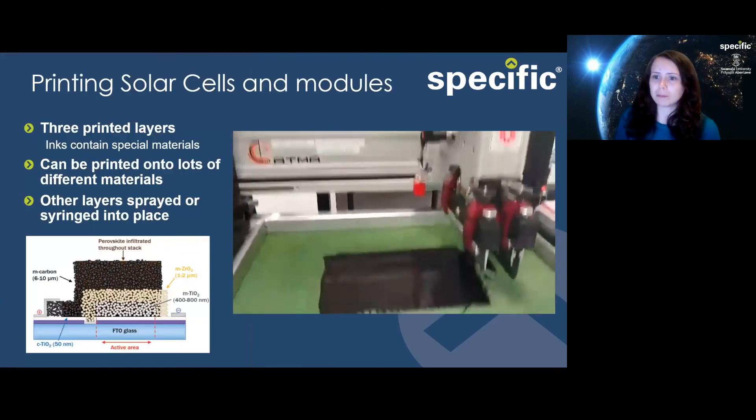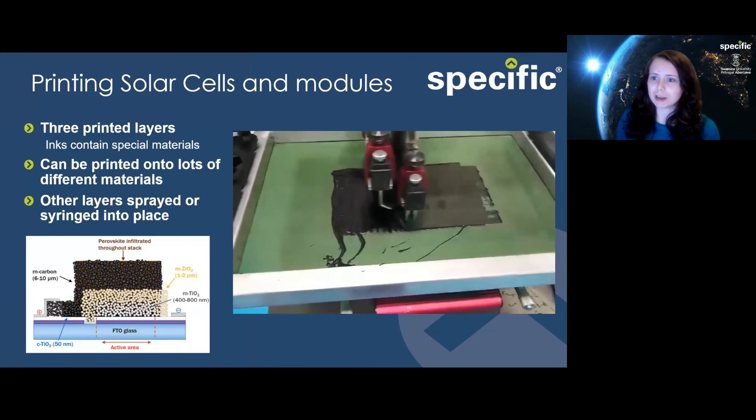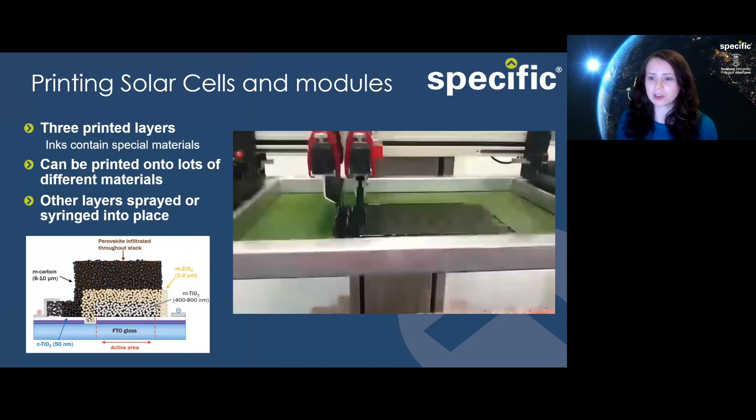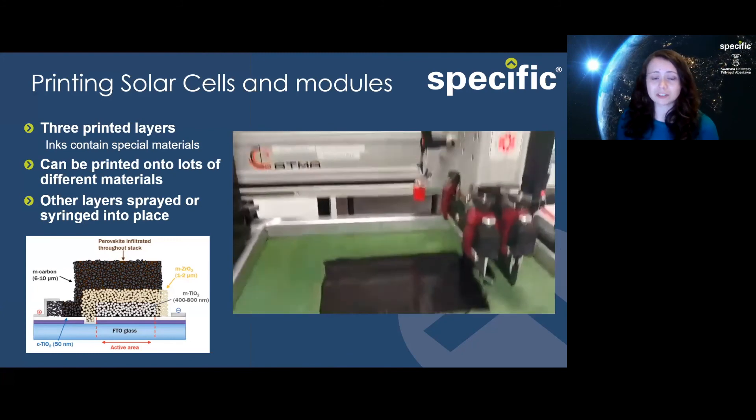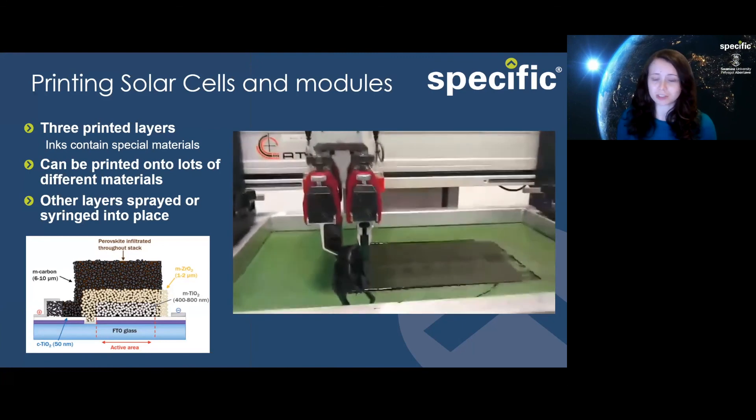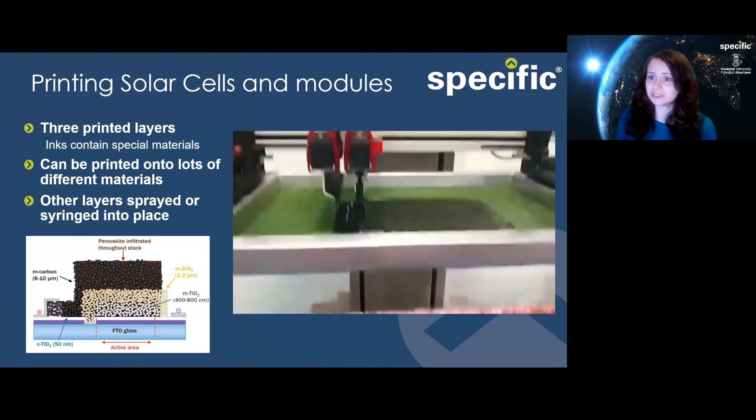Printing happens with three of the different layers. What you can see here is conductive carbon going down. We also put down titania and zirconia, and the things that aren't printed are sprayed or syringed into place, in the case of these perovskite solar cells, which are nice and simple to make.